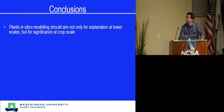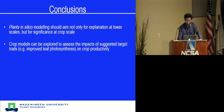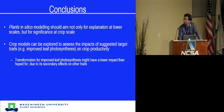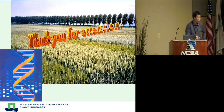In conclusion: the plant-in-silicon modeling approach should aim not only for explanation at the lower scales, but also for significance at the crop scales. Current crop models can already be used for preliminary in-silicon assessment of the impact of suggested targets — like improving photosynthesis — on final productivity. G-GLOSS-based simulations revealed that transformations for improved photosynthesis might have lower impact than hoped for, due to secondary effects on other processes. Only when multiple photosynthetic elements are all improved together is there the possibility for maximum benefit. Thank you for your attention.